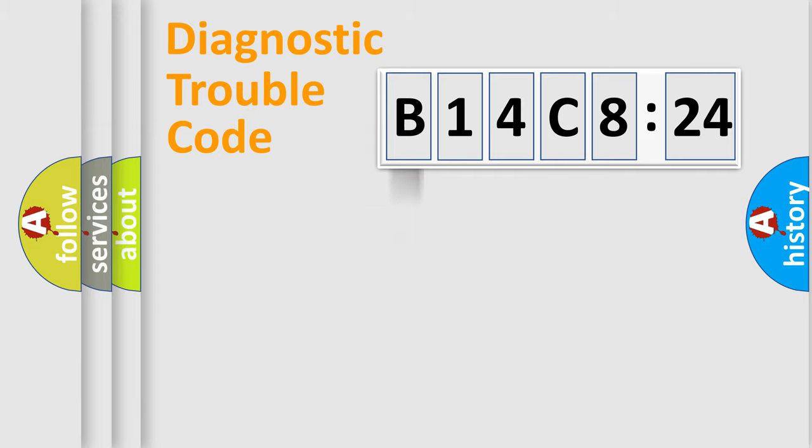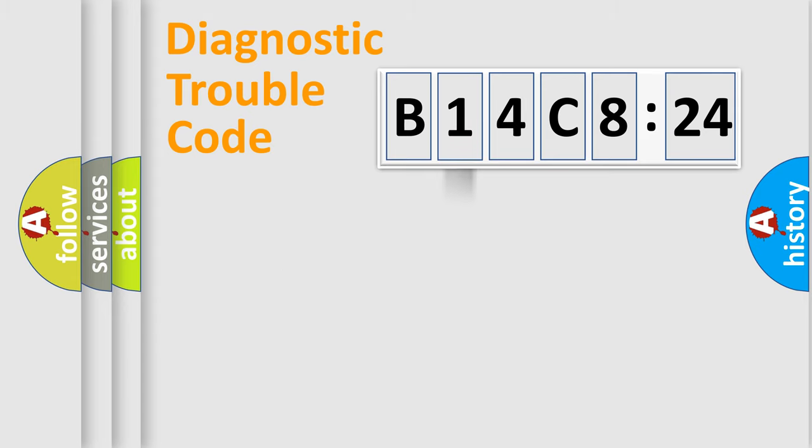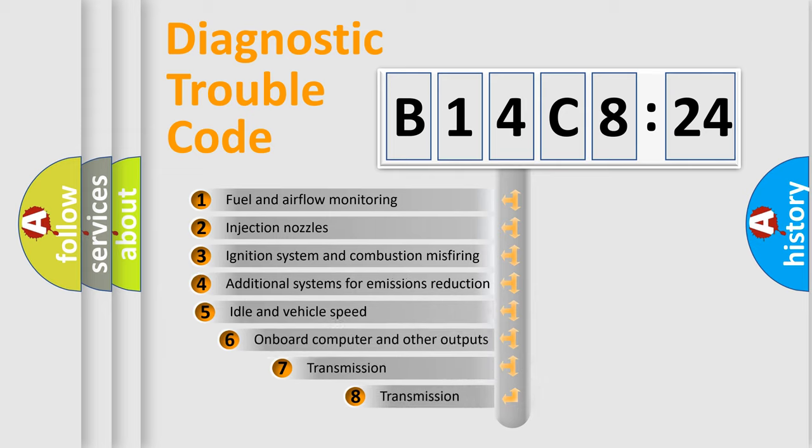Powertrain, Body, Chassis, Network. This distribution is defined in the first character code. If the second character is expressed as zero, it is a standardized error. In the case of numbers 1, 2, 3, it is a manufacturer-specific expression of the car-specific error.